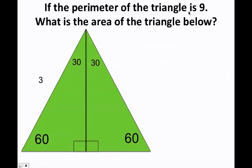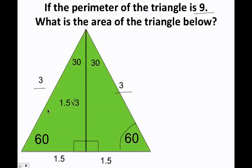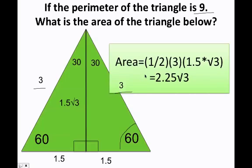Let's do another one. Now the perimeter is equal to 9. Divide 9 by 3 and I get 3 for each side, so the half is 1.5 and 1.5. The height for the 60-degree side is 1.5 times the square root of 3. Now I can follow the formula: the area is going to be equal to 1 half times the base — the base is 3 — times 1.5 times the square root of 3, and that gives me 2.25 times the square root of 3.